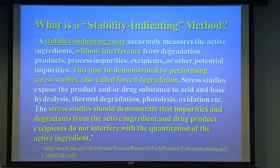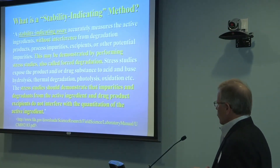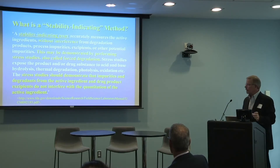This is an FDA definition, documented in a few literature examples: the stability indicating assay accurately measures the API or APIs without interference from degradation products or process impurities. It may be demonstrated by performing stress testing studies or forced degradation. The stress testing studies should demonstrate that the impurities and degradation products do not interfere with quantitation — they need to be resolved in your method from the apparent peak. If you're thinking HPLC, you're thinking separation and resolution. For other methods like titration, they simply need to not interfere.